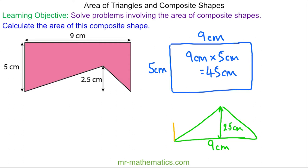To work out the area of the triangle, I'm going to make it into a rectangle with a perpendicular height of 2.5 centimeters. The area of the rectangle is 2.5 multiplied by 9 centimeters, which is 22.5 centimeters squared.